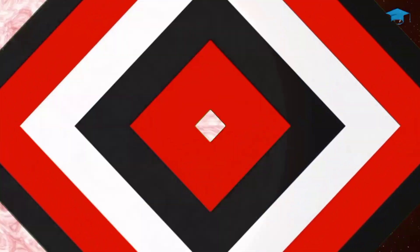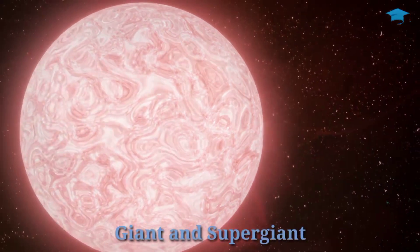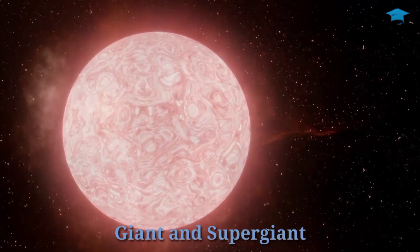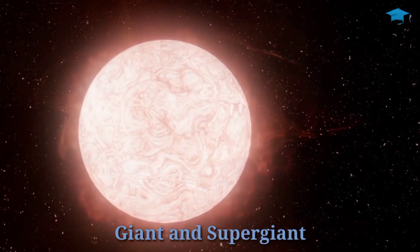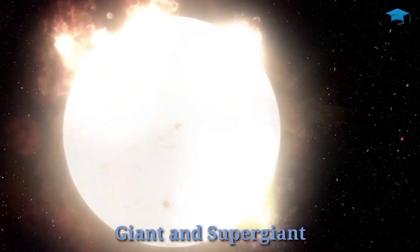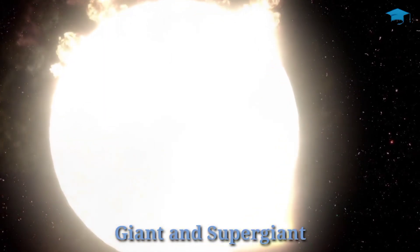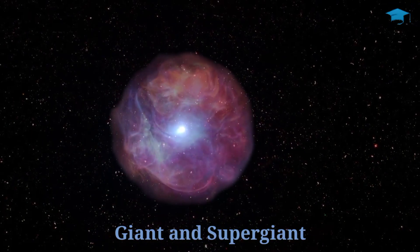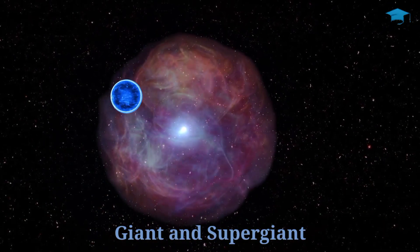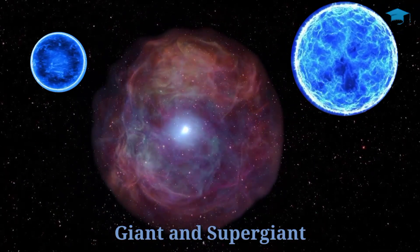Now a new class of star will come which is giants and supergiants. When a star runs out of its hydrogen, it starts to burn its helium. Thus it transforms into either a giant or supergiant depending upon its mass. So in this list there are blue giants, then blue supergiants, then red giants and red supergiants.